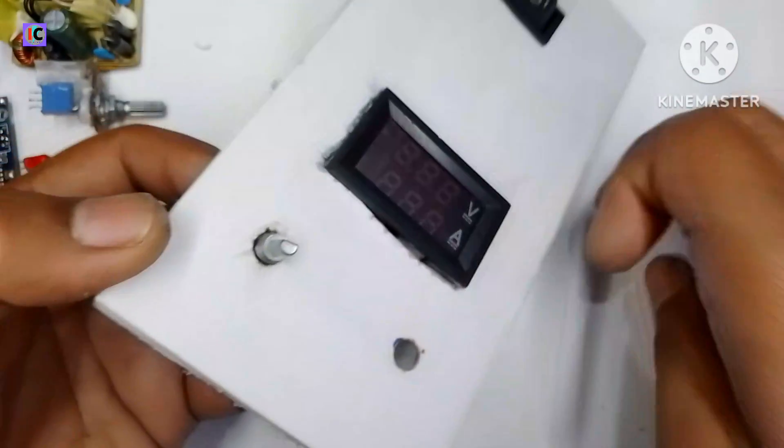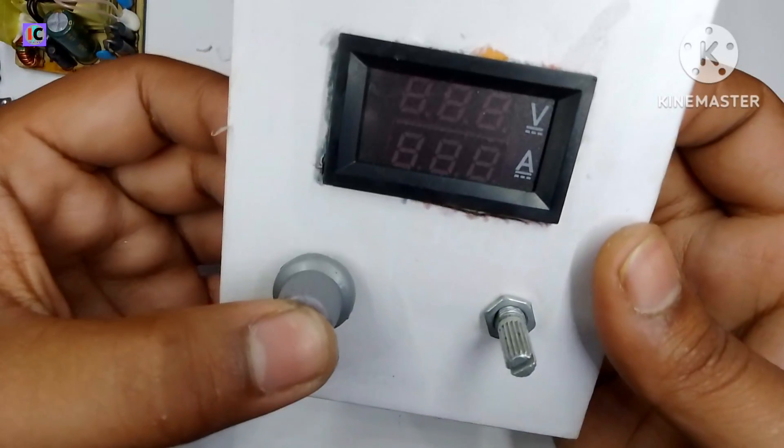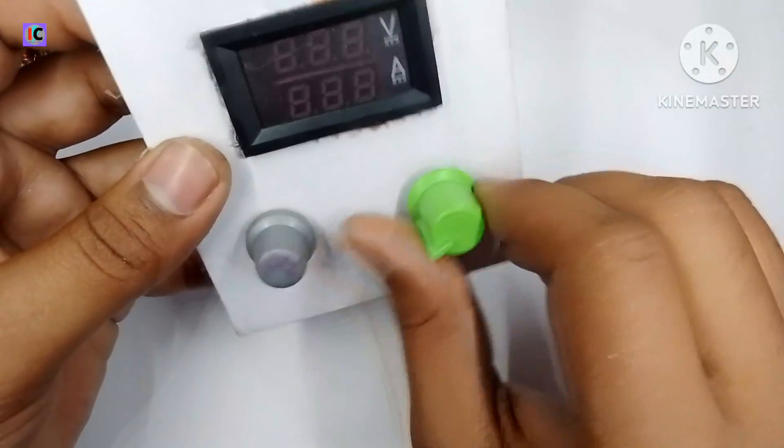And now put both potentiometers. And now after this I have added the rotating knob for these potentiometers.